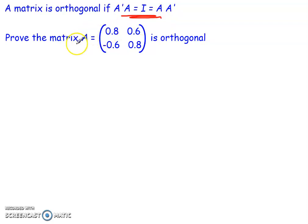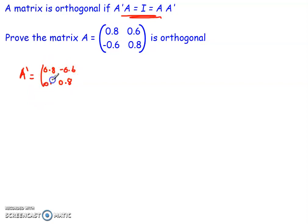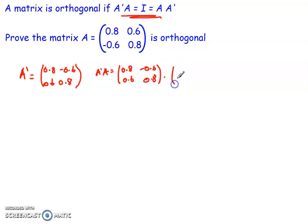Let's verify with the matrix A = [0.8, 0.6; −0.6, 0.8]. First, take the transpose Aᵀ: the diagonal entries stay the same (0.8 and 0.8), and the off-diagonal entries swap signs, giving Aᵀ = [0.8, −0.6; 0.6, 0.8]. Now multiply Aᵀ × A.